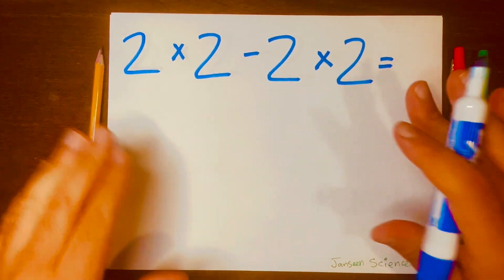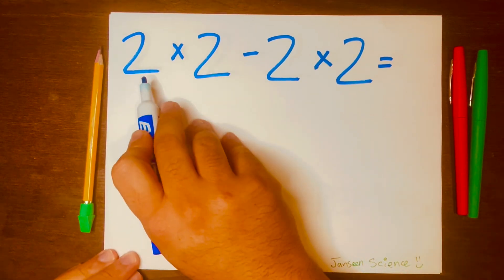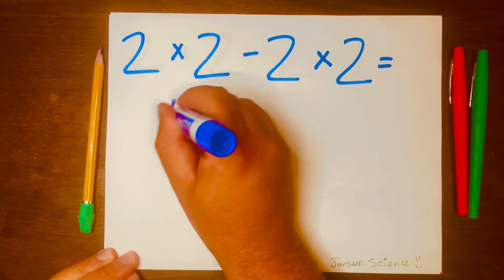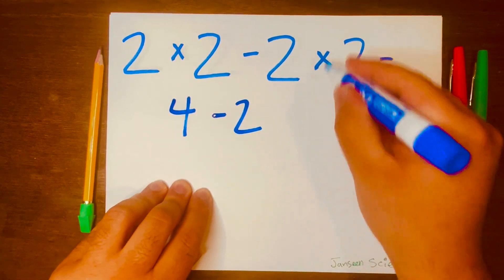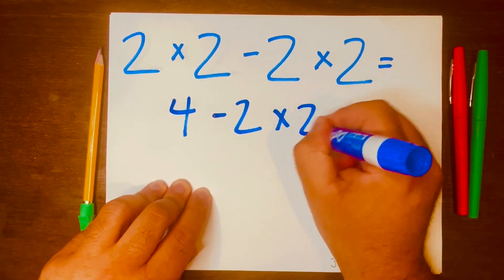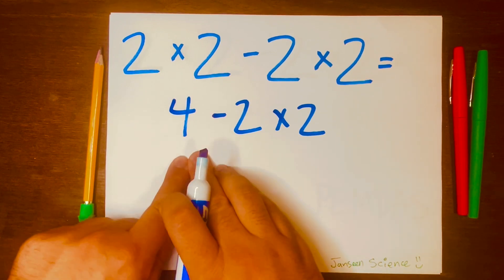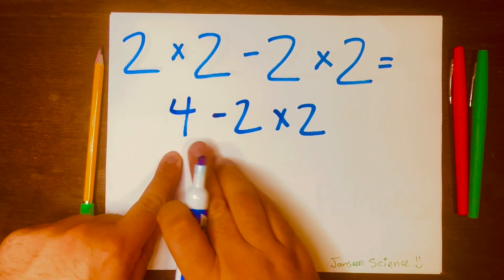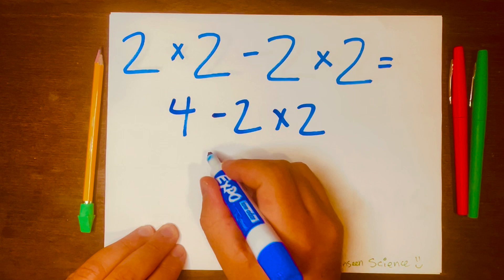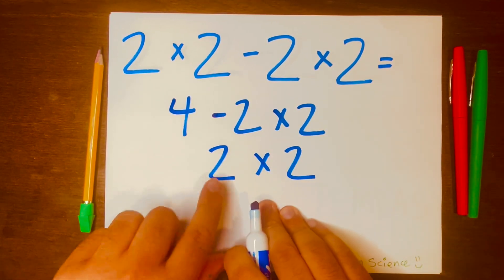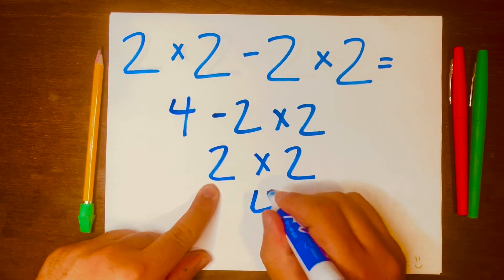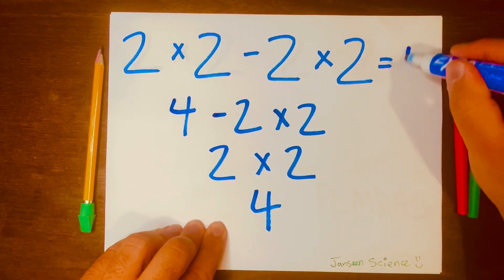Now some people will start by multiplying 2 times 2 which is 4, then they'll bring the minus 2 and then times 2. Then they'll subtract 4 minus 2 which is 2, bring the times 2, and then multiply 2 times 2 which equals 4. So the answer will be 4.